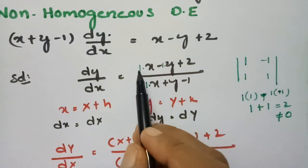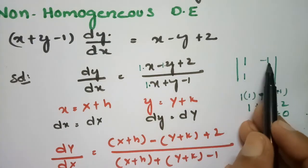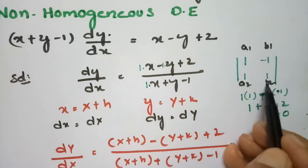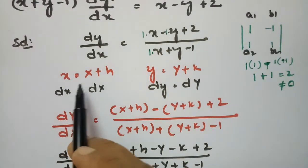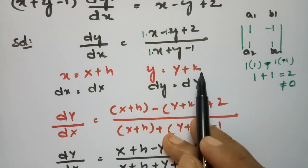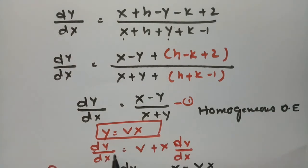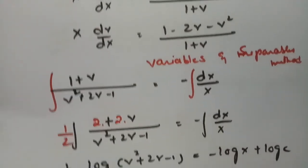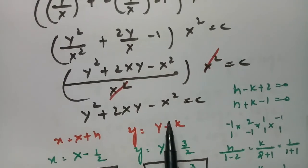Identify a1, b1, a2, b2 from the equation. Here a1 = 1, b1 = -1, a2 = 1, b2 = 1. Compute a1*b2 - a2*b1 ≠ 0. Use substitution x = X + h, y = Y + k, which transforms the equation into a homogeneous differential equation. Then put Y = vX and dy/dX = v + X·(dv/dX).